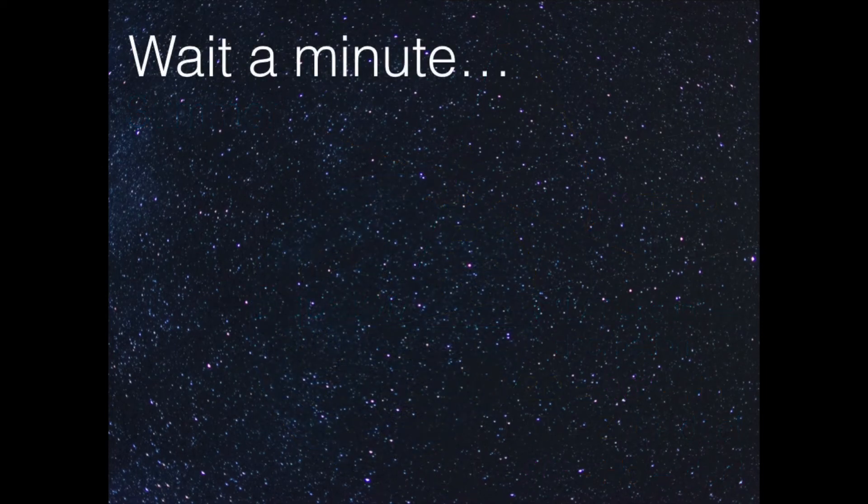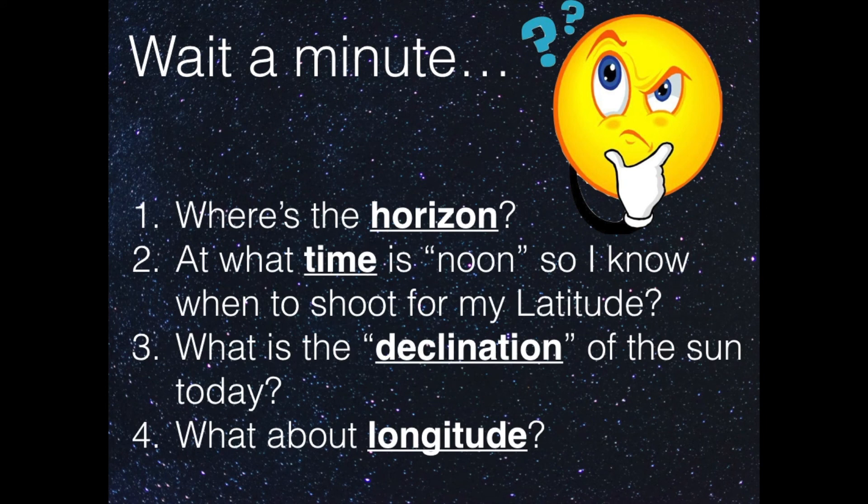We have here four questions to answer, and this will take us through the course, to answer these four questions. Question number one: Where is the horizon? Question number two: At what time is noon, so I know when to shoot for my latitude? Question number three: What is the declination of the sun today? How can we find the declination? And question number four: Well, we only have the latitude, we have to find the longitude somehow.